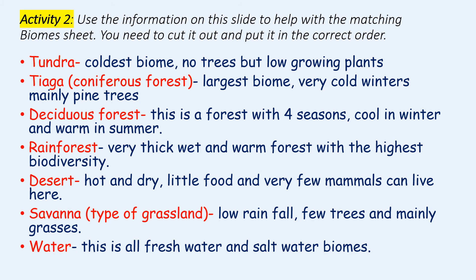The next activity is to match the correct biome with the correct description. The worksheet can be found in the biomes one folder, labelled activity two worksheet two. You can use the information on the slide to help you: the tundra being the coldest biome with no trees but low growing plants; the taiga being the largest biome with very cold winters and mainly pine trees; the deciduous forest with four seasons; the rainforest with thick, wet, warm forest and high biodiversity; the desert being hot and dry; the savannah grassland having low rainfall, few trees and mainly grasses; and finally water having fresh water and salt water biomes.